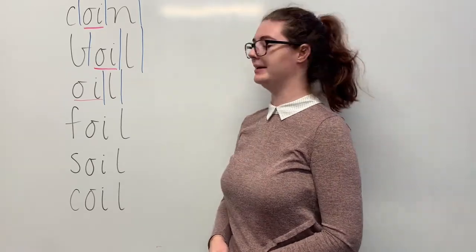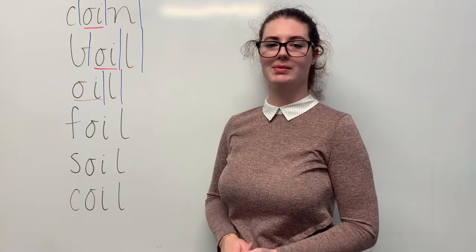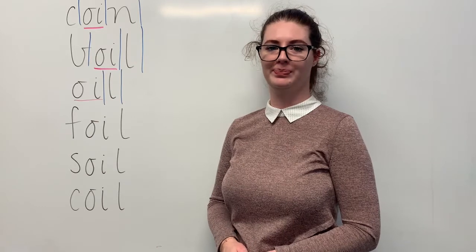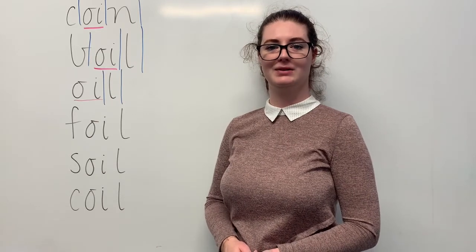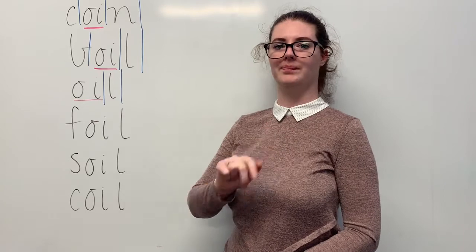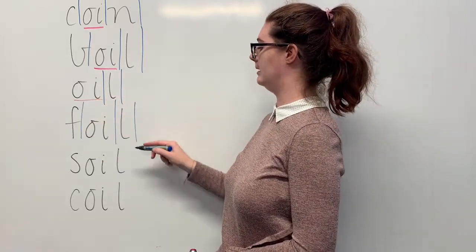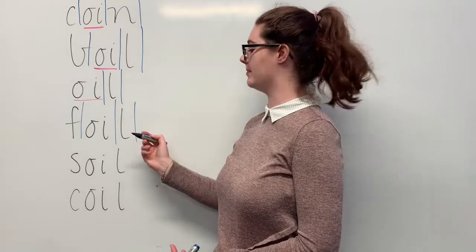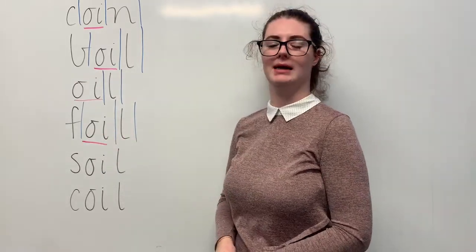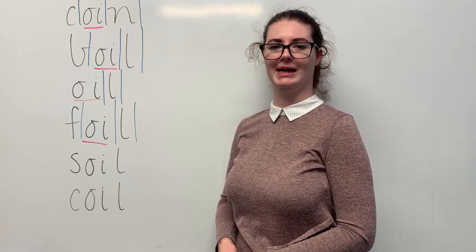Our next word is foil. Say foil. When I was in primary school, my mum used to wrap my sandwiches in foil to keep them fresh. The sounds in foil are, together, f, oi, l. The letters in foil are f, o, i, l. The part we need to remember is the oi digraph making the oi sound. Can you teach it to me? Foil: f, o, i, l.